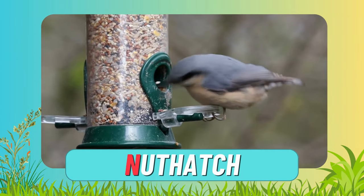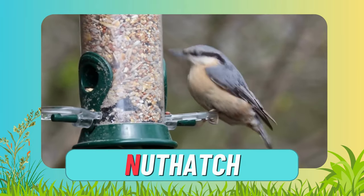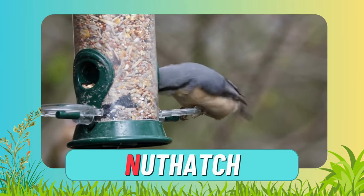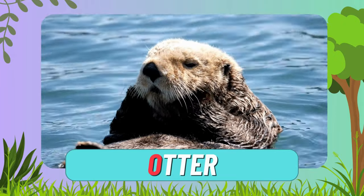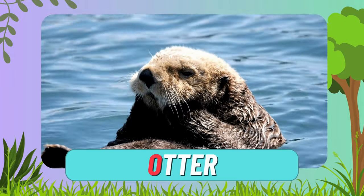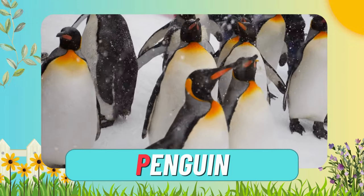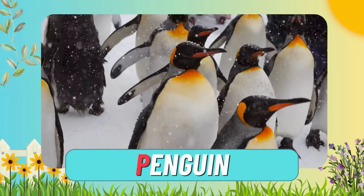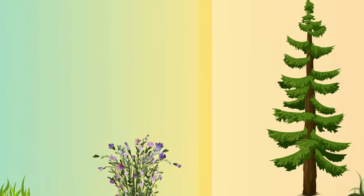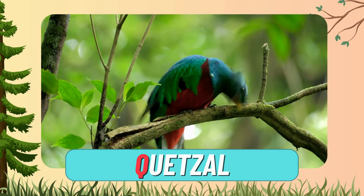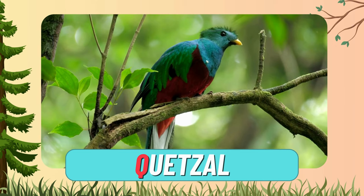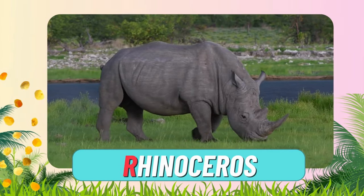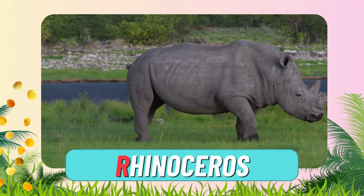The letter N is for nuthatch. The letter O is for otter. The letter P is for penguin. The letter Q is for quetzal. The letter R is for rhinoceros.